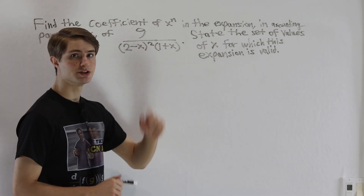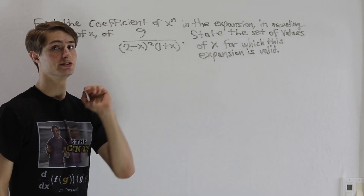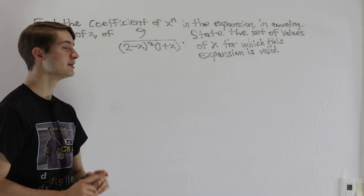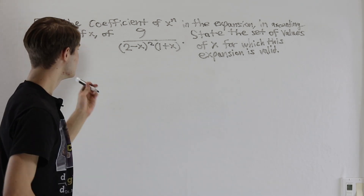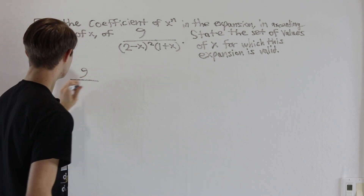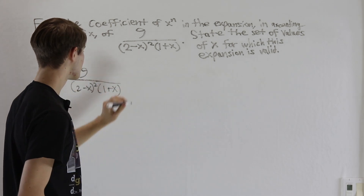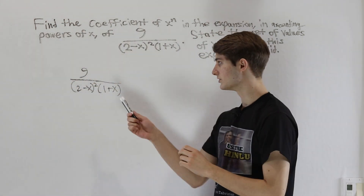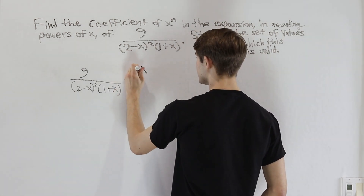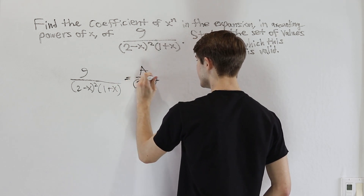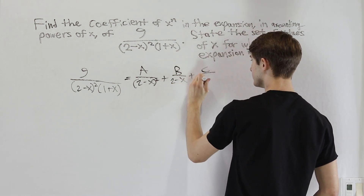In order to find a Taylor series of this, the function as it stands is not very nice because we have multiple things in the denominator. Taylor series are a lot easier when we just have one thing to work with in the denominator. So let's try partial fraction decomposition on 9 over (2 minus x) squared times (1 plus x), ending up with A over (2 minus x) squared, plus B over (2 minus x), plus C over (1 plus x).